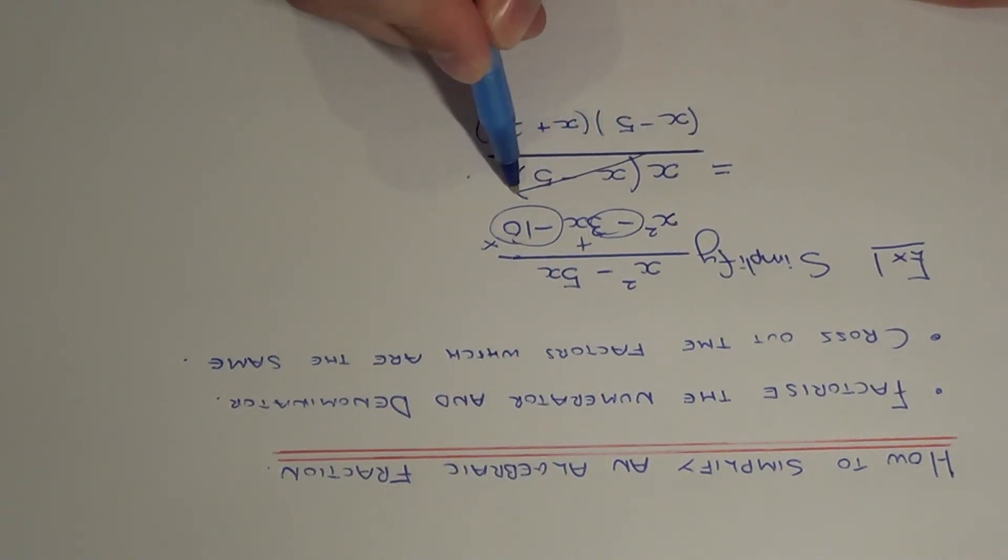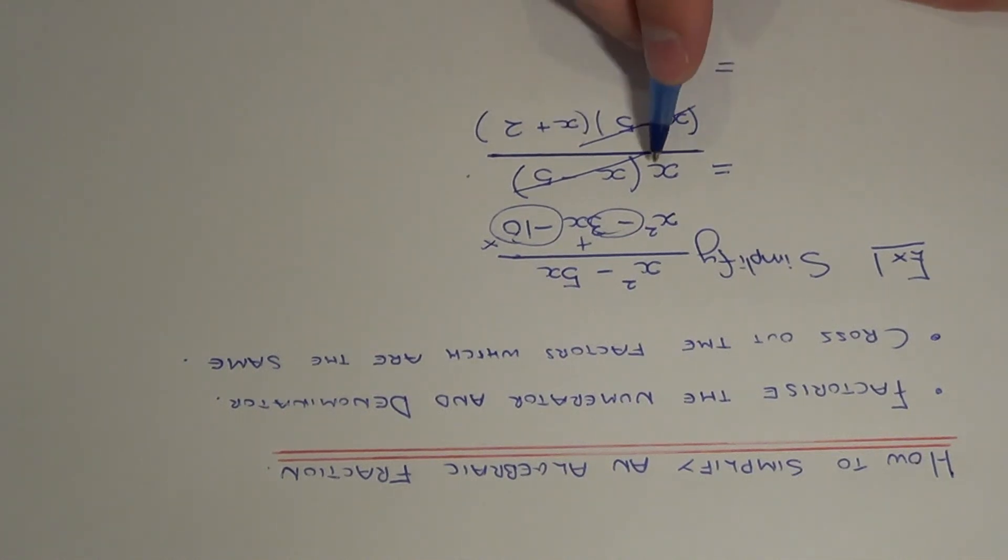So we can cancel out this pair of factors. This will leave us with x on the numerator and that is over x plus 2.